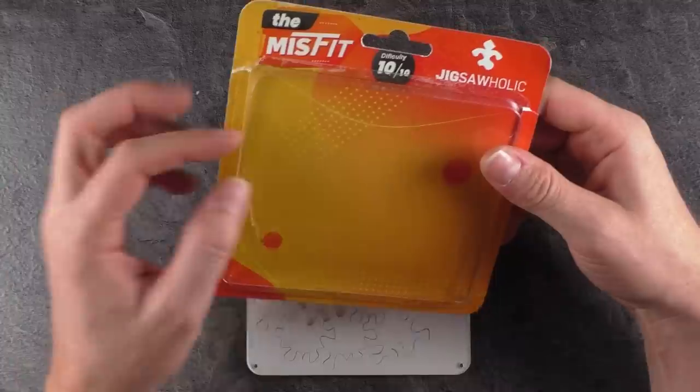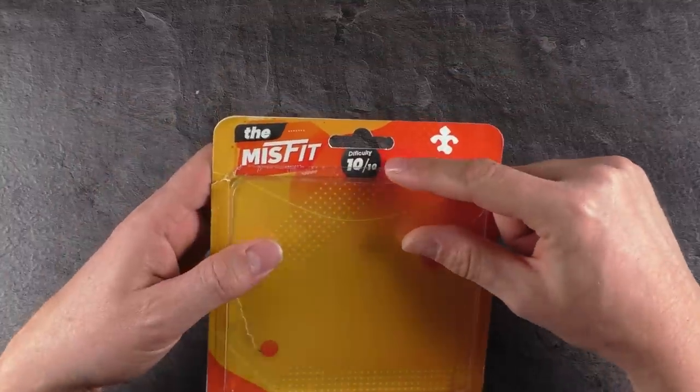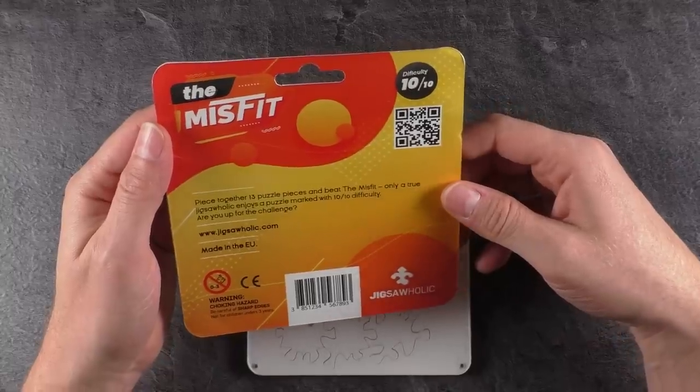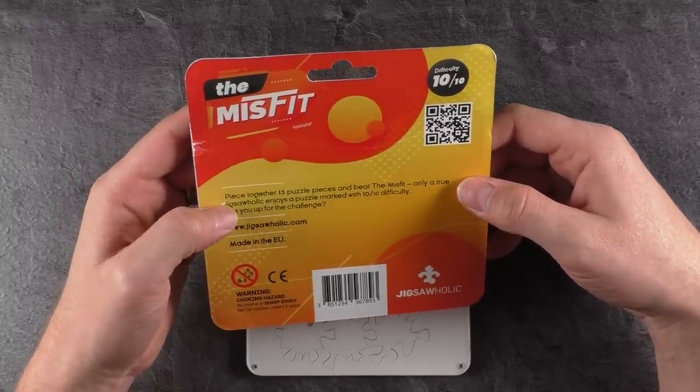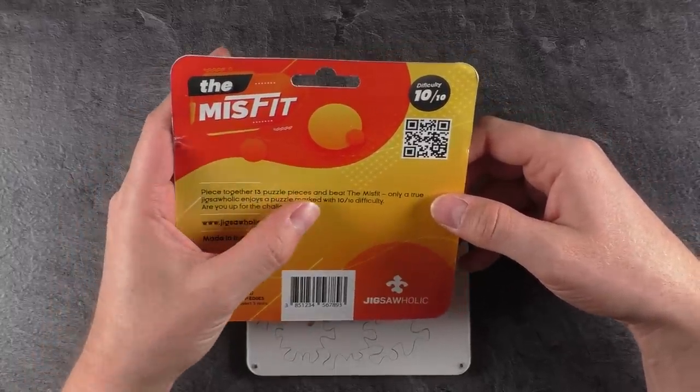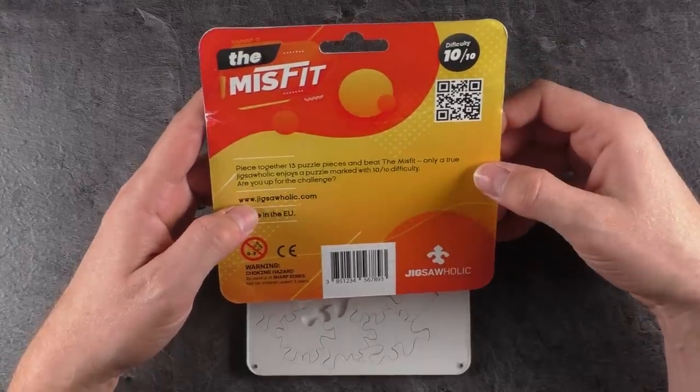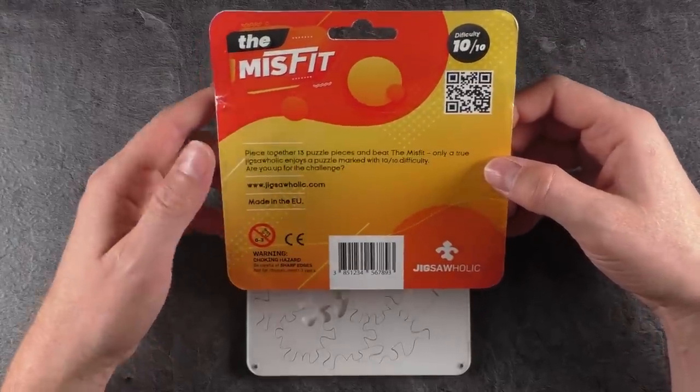This is the packaging it comes in. I already took it out of the box. The difficulty rating by the way 10 out of 10 on the Jigsaholic difficulty rating scale and the target is piece together 13 puzzle pieces and beat The Misfit. Only a true Jigsaholic enjoys a puzzle marked with 10 out of 10 difficulty. Are you up for the challenge? Yes. Oh yes I am.